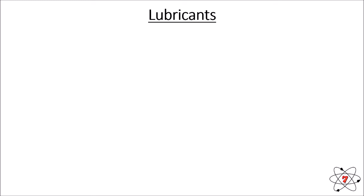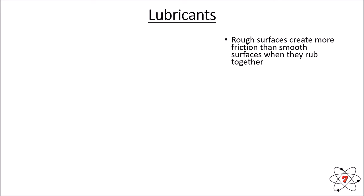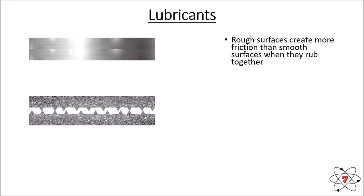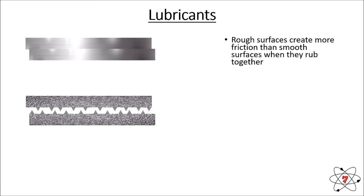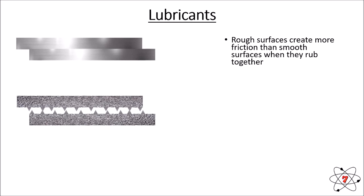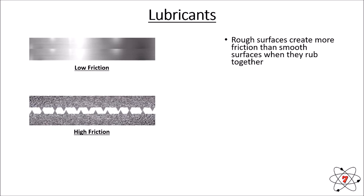To reduce friction we need to think about something called lubricants. Rough surfaces create more friction than smooth surfaces — the rougher the surface, the more friction as those surfaces rub together. We can see that a fairly smooth surface will have much lower friction than a rough surface. High friction may be desirable or undesirable depending on the situation.